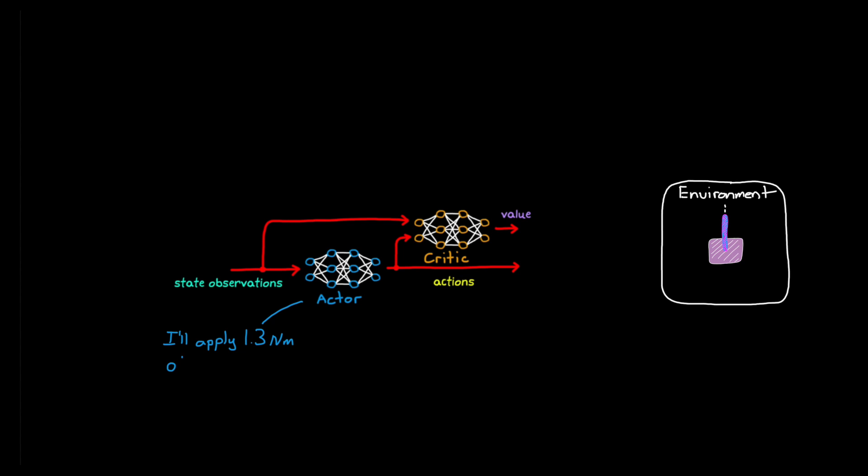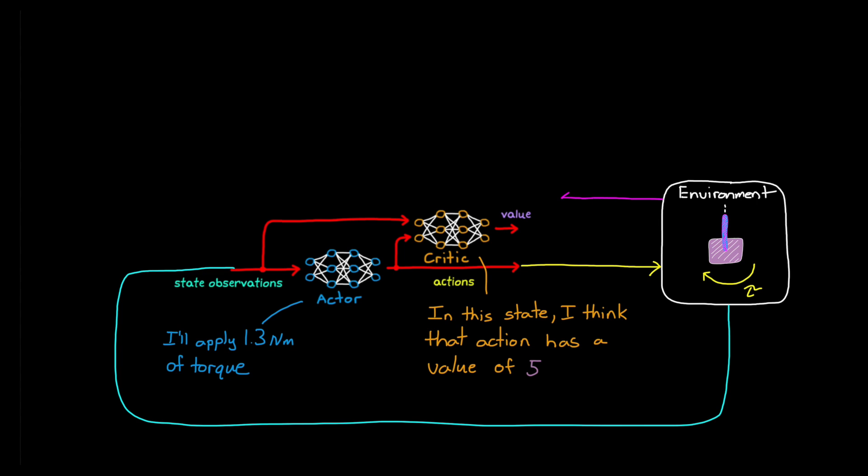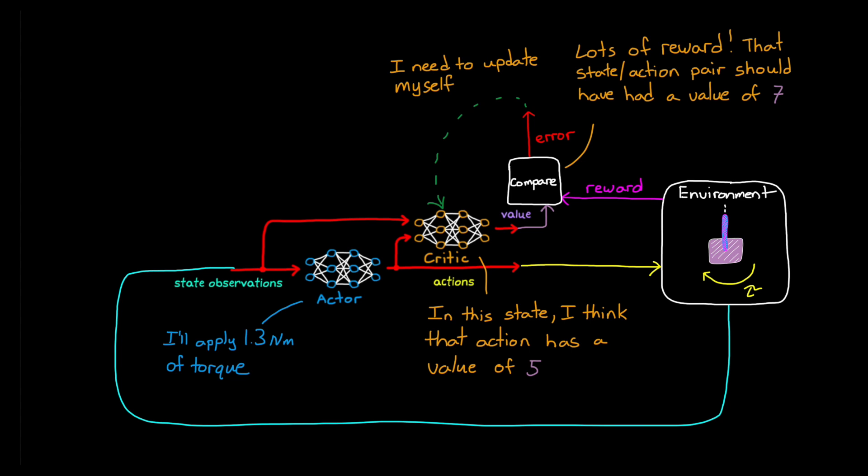Here's how it basically works. The Actor chooses an action in the same way that a policy function algorithm would, and it's applied to the environment. The Critic estimates what it thinks the value of that state and action pair is, and then it uses the reward from the environment to determine how accurate its value prediction was. The error is the difference between the new estimated value of the previous state and the old value of the previous state from the Critic network. The new estimated value is based on the received reward and the discounted value of the current state. And it can use this error as a sense of whether things went better or worse than the Critic expected. The Critic uses this error to update itself in the same way that the value function would, so that it has a better prediction the next time it's in this state. The Actor also updates itself with the response from the Critic and, if available, the error term, so that it can adjust its probabilities of taking that action again in the future.